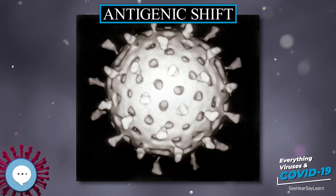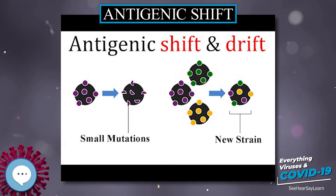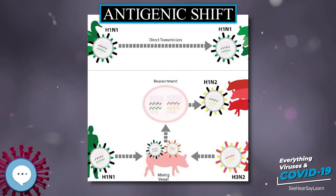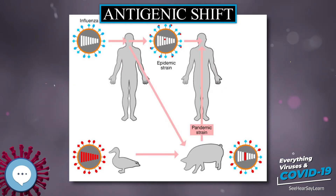Antigenic shift is the process by which two or more different strains of a virus, or strains of two or more different viruses, combine to form a new subtype having a mixture of the surface antigens of the two or more original strains. The term is often applied specifically to influenza, as that is the best known example, but the process is also known to occur with other viruses, such as Visna virus in sheep.